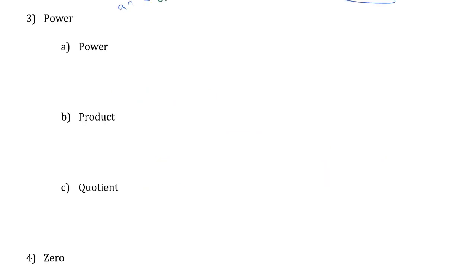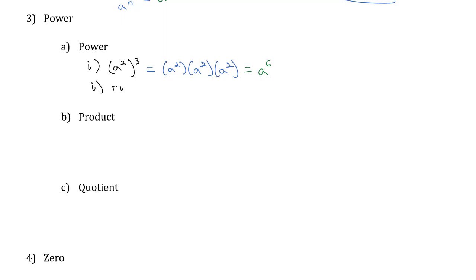Our next set of rules are called the power rules, and there are actually three power rules that are closely related. For the first one, the power of a power rule, we consider a squared cubed. That cubed means a squared appears three times. We already know from our exponent properties that if the base is the same, we can add those exponents, giving us a to the sixth. If we've got a to some power raised to some other power, the way to get that answer is to multiply those numbers together — we multiply m times n.